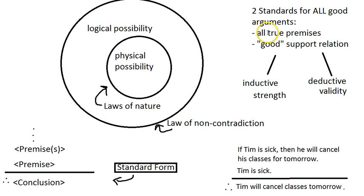The most traditional notion of truth is that the state of affairs that the claim represents is actually the case. For instance, if I say 'Tim is sick today,' that's true if Tim is in fact sick, and not true if he isn't. That's the most traditional notion of truth in philosophy — the idea that there's a correspondence relation between my claim about the world and how the world actually is. We're actually not going to spend as much time talking about truth in this class, which you might be a little surprised at.